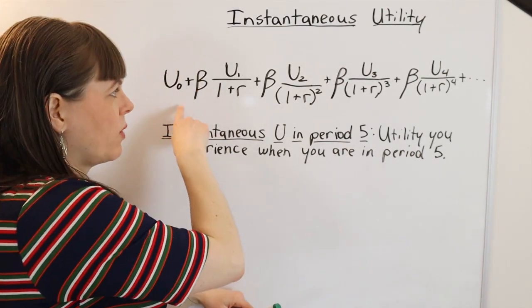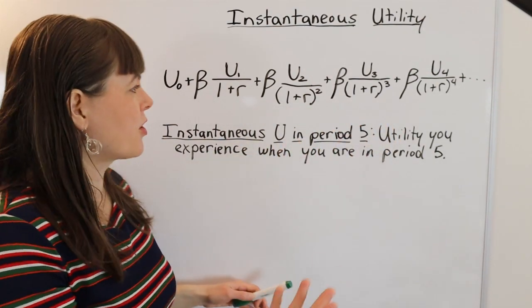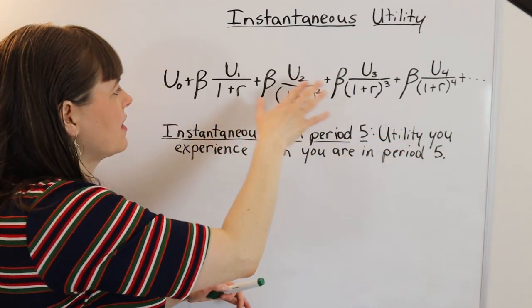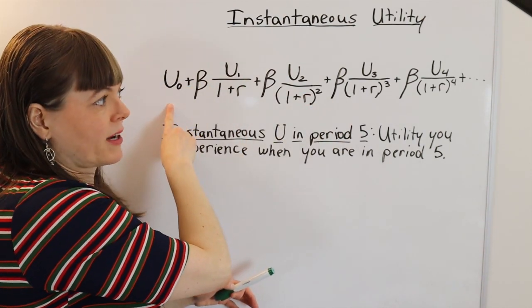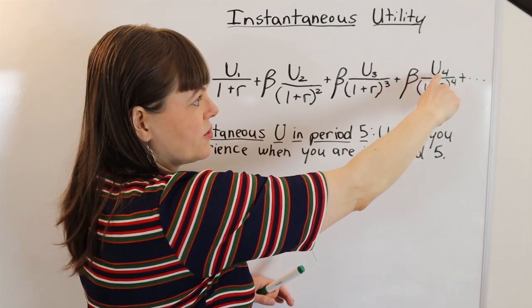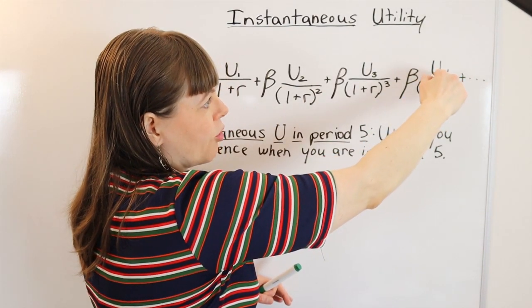And of course, when you're writing something out like this, you're writing it in present value. So all of this utility is being adjusted to put it into time period zero's perspective, in which case we have the instantaneous utility experienced in period four,